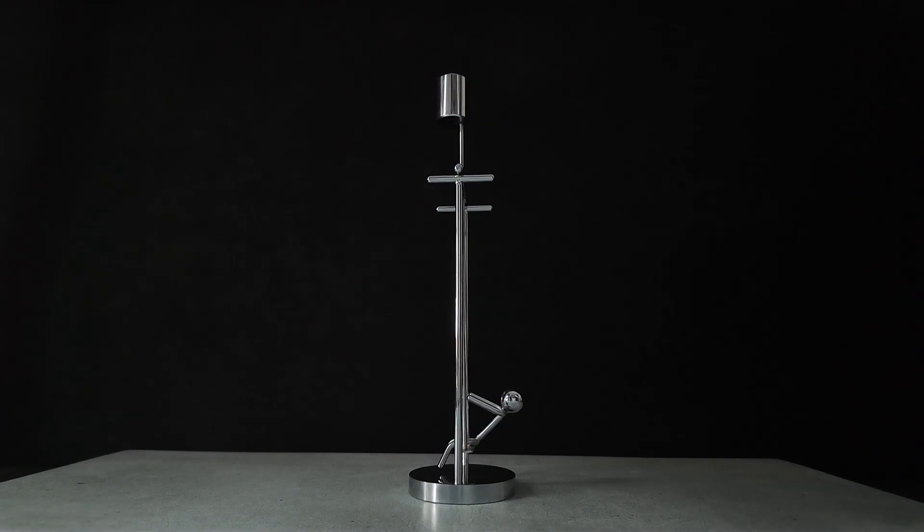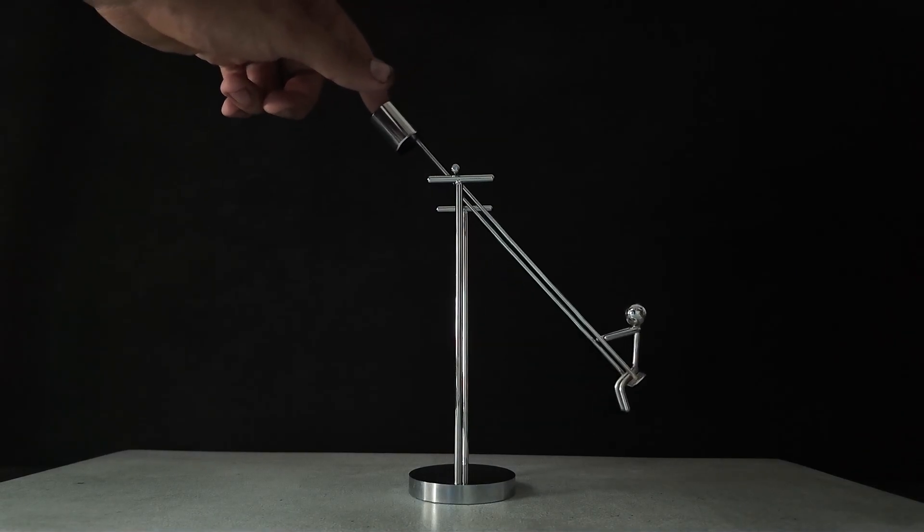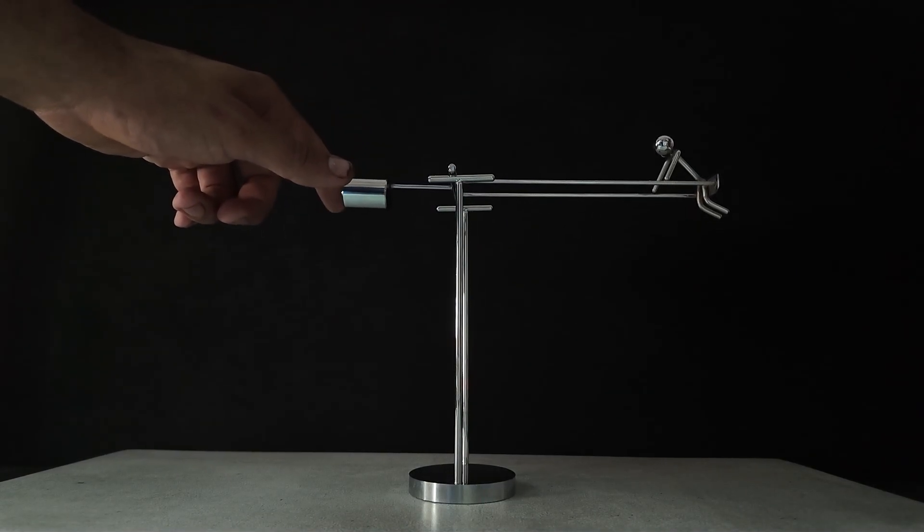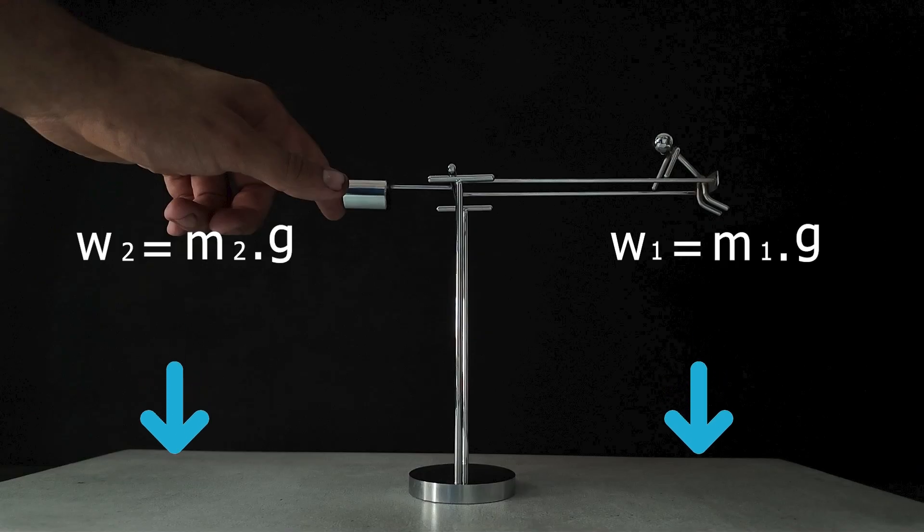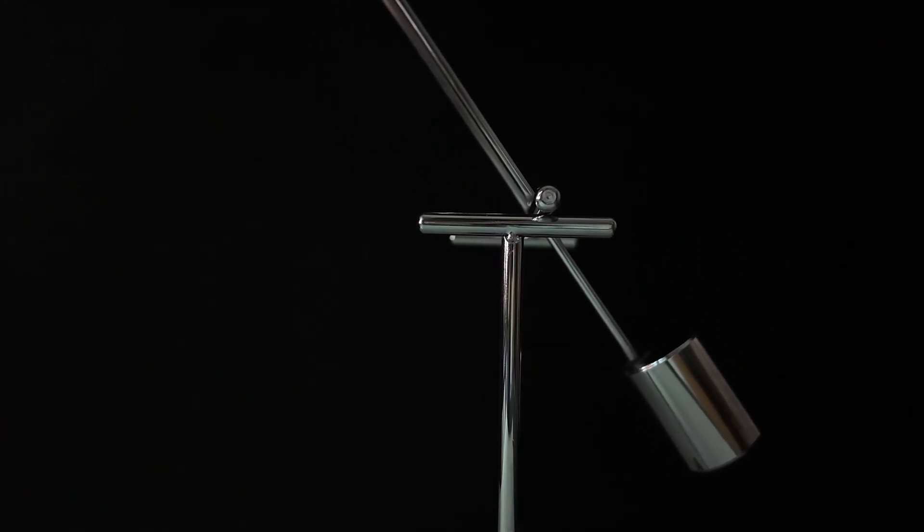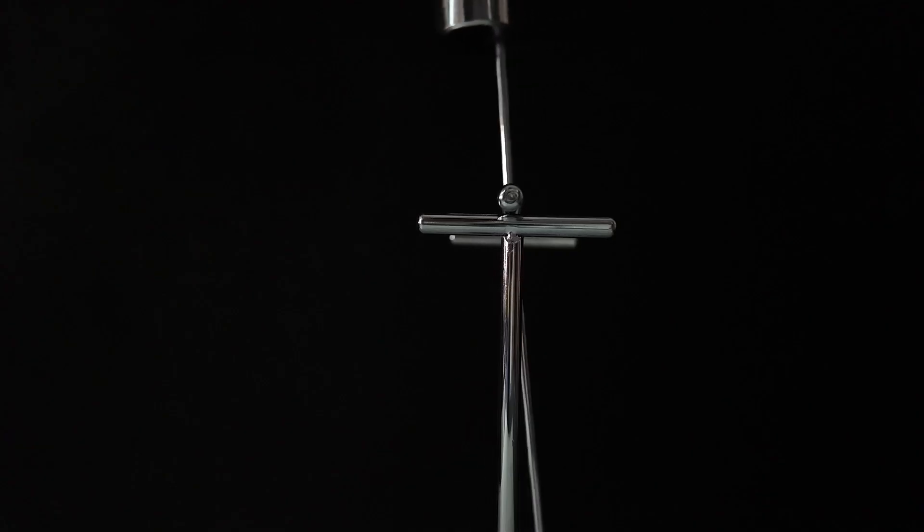When we move the sculpture out of its balanced position, the change in height gives both weights gravitational potential energy. At this point, gravity pulls both weights downward. That's their weight force. But since both are connected to a circular pivot rod, their motion becomes rotational.